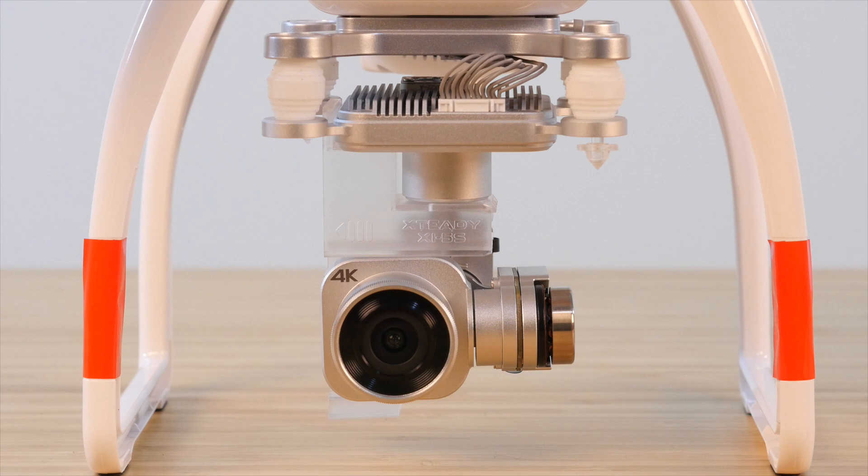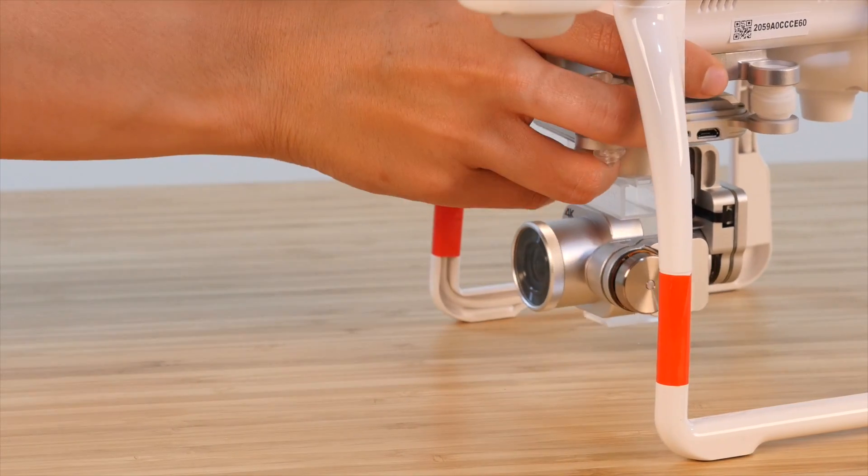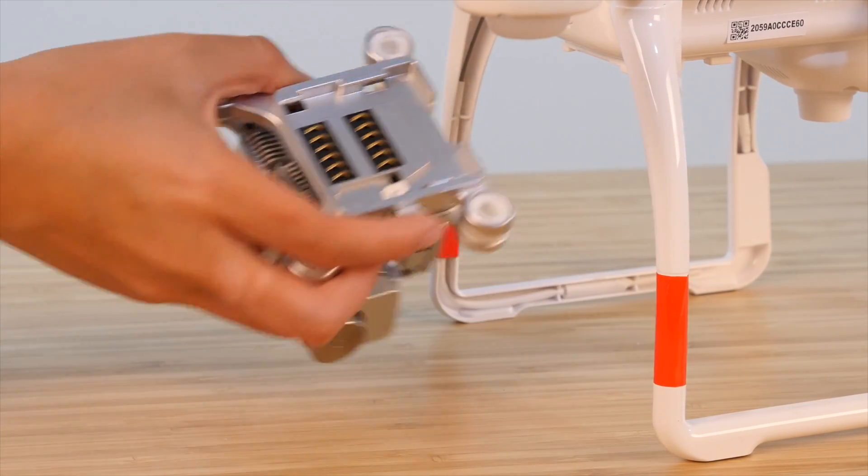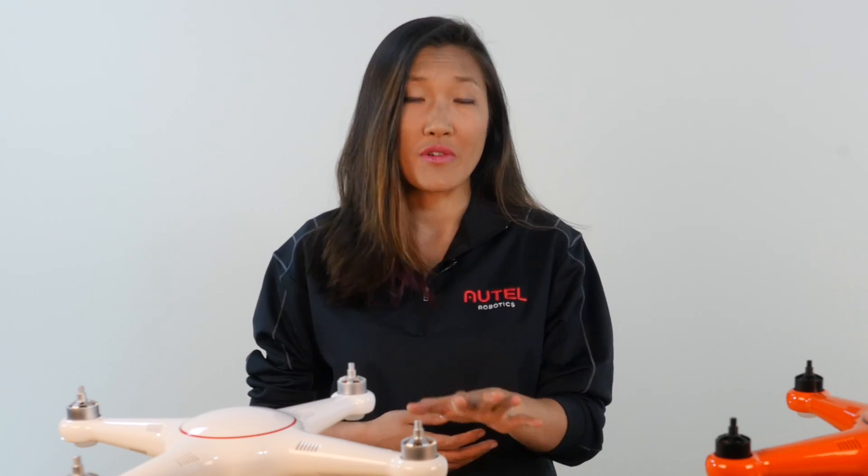Now, the cool thing about this design is that the whole gimbal and camera setup is modular. You can easily remove this by pressing the quick release button on the side and sliding the whole module forward. Make sure that you've powered off the aircraft fully before removing this module.